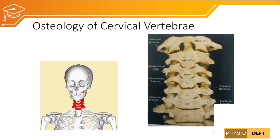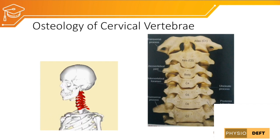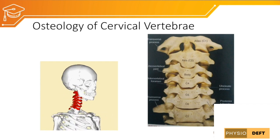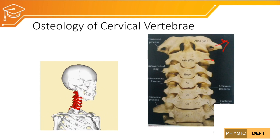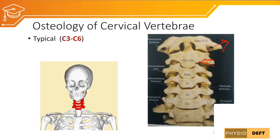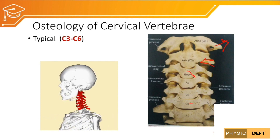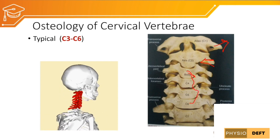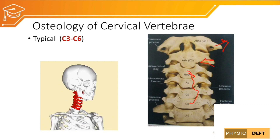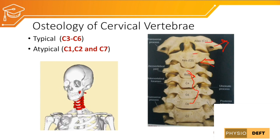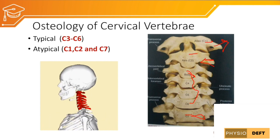Osteology of the cervical vertebrae: we have seven cervical vertebrae — C1, C2, C3, C4, C5, C6, and C7. C1 is called the atlas and C2 is called the axis. C3 to C6 are typical vertebrae, meaning their structures are identical. C1, C2, and C7 are atypical vertebrae, meaning they are unique in their structure.